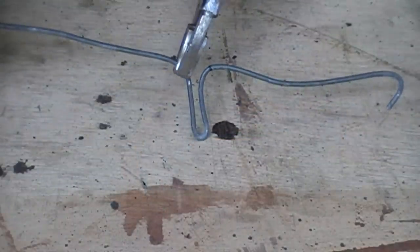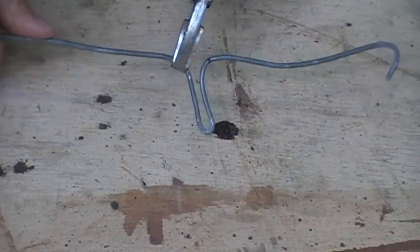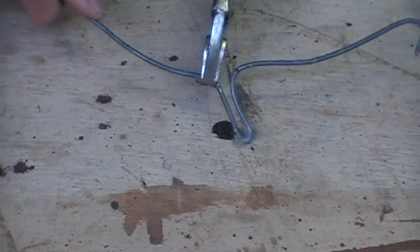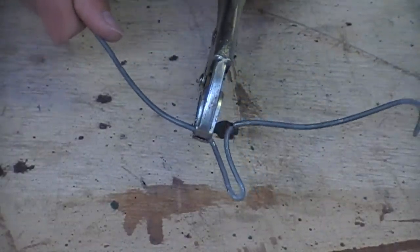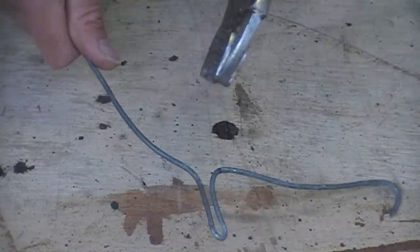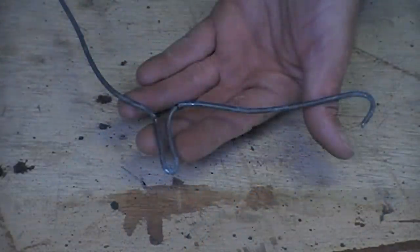Now clamp on to that last 90 degree bend with the vise grips again and bend down the wire almost 90 degrees in a slow radius bend. Like so.